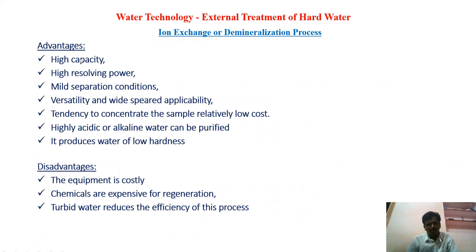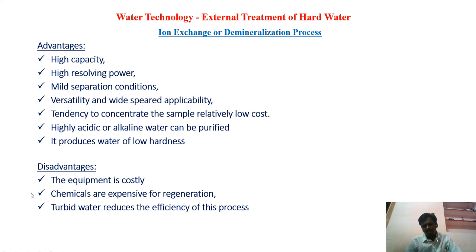The advantages are: it has high capacity to remove both cations and anions, high resolving power, and separation conditions are very mild. It can be used to treat both acidic and alkaline water, and the water coming out has very low or no hardness. The disadvantages are: the equipment is very costly, and the chemicals used to regenerate saturated resins are expensive. If the water is turbid, it may reduce the efficiency of this process, as turbidity can clog the functional groups.